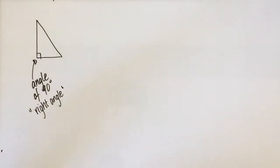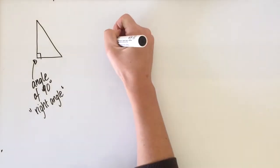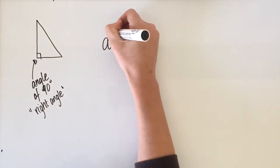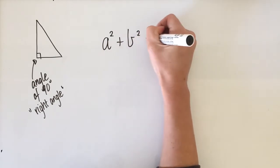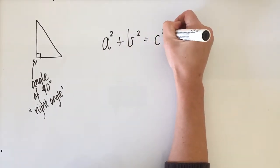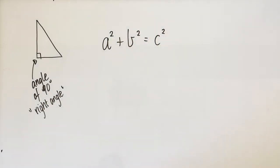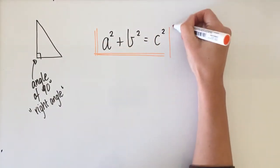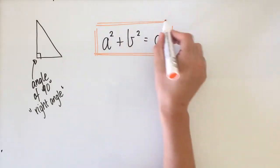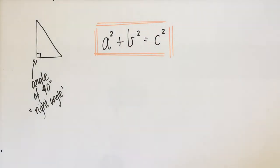We need to use Pythagoras' special formula to prove if a triangle is right-angled or not. Pythagoras' theorem is a squared plus b squared equals c squared. Make sure you write this down because we're going to use it over and over again — this is his special formula that we need to know.